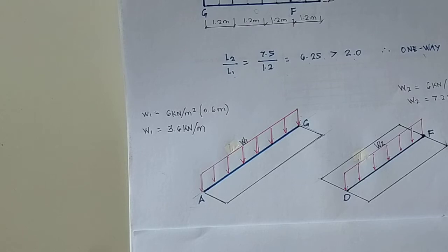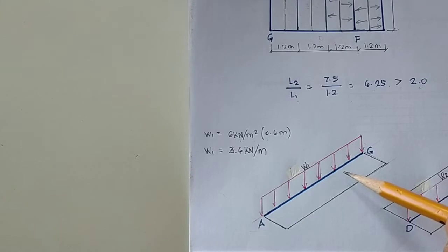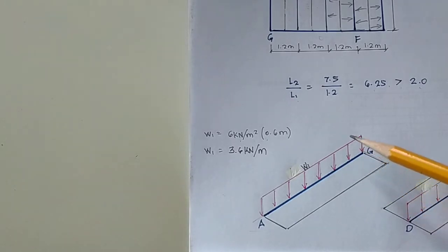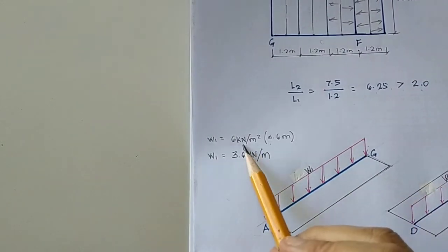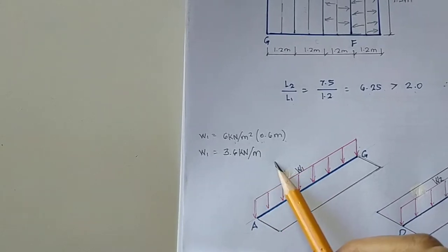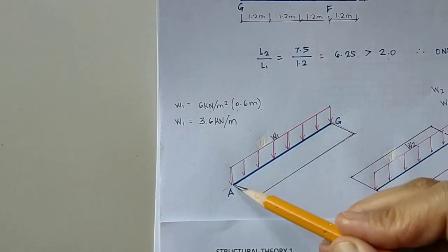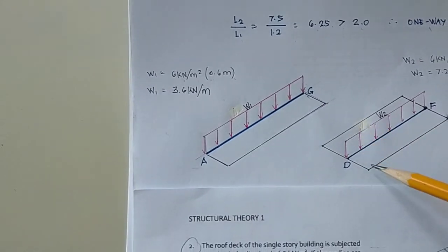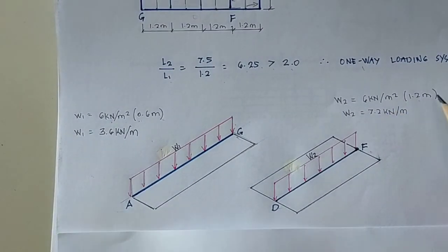Therefore, the assigned load is 6 kN per square meter. So for the purlin at the edge, AG will be 6 kN per square meter multiplied by 0.6 meter, which gives us 3.6 kN per meter. And for the purlin at the center, DF will be 6 kN multiplied by 1.2 meters, giving us 7.2 kN per meter.